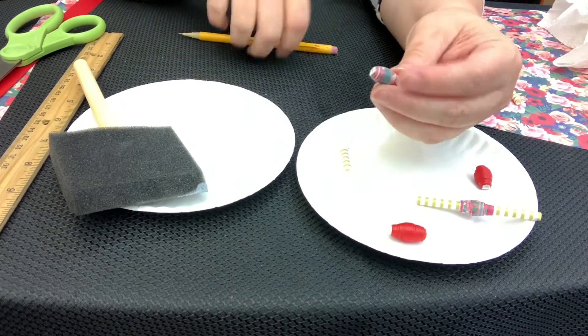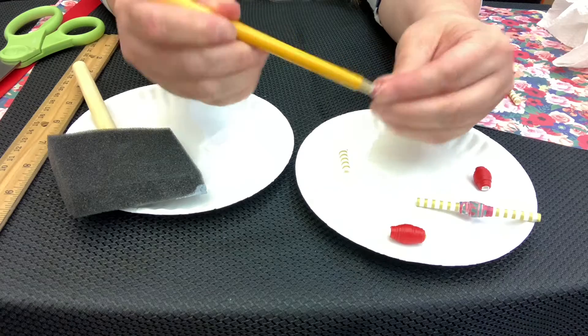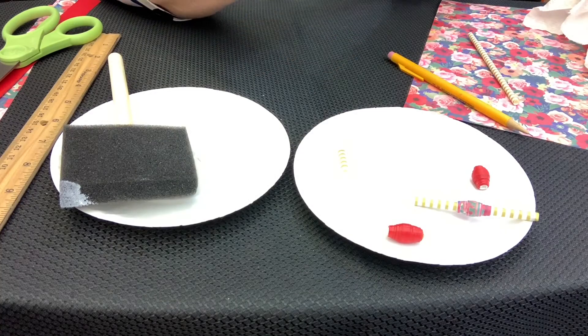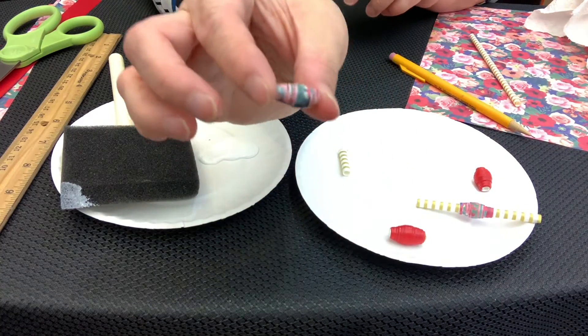And you need to cut the other end of the straw as well. And once again, there may be some collapsing of the straw, so just put your pencil in there. And you have your bead.